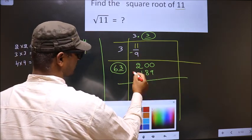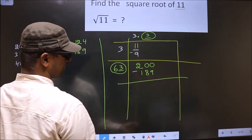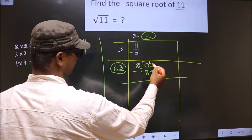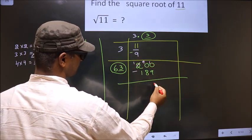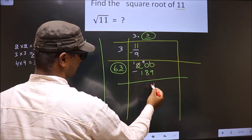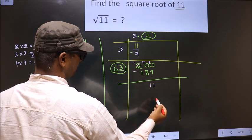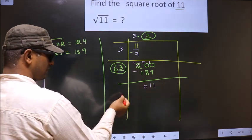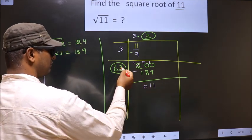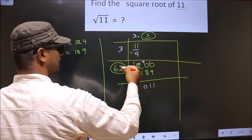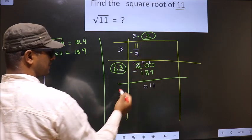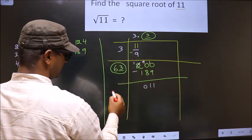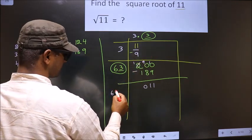Now subtract: 200 minus 189. Here: 10 minus 9 is 1, 9 minus 8 is 1, 1 minus 1 is 0, giving remainder 11. Here we should add these two numbers: 63 plus 3 is 66. Write that here.